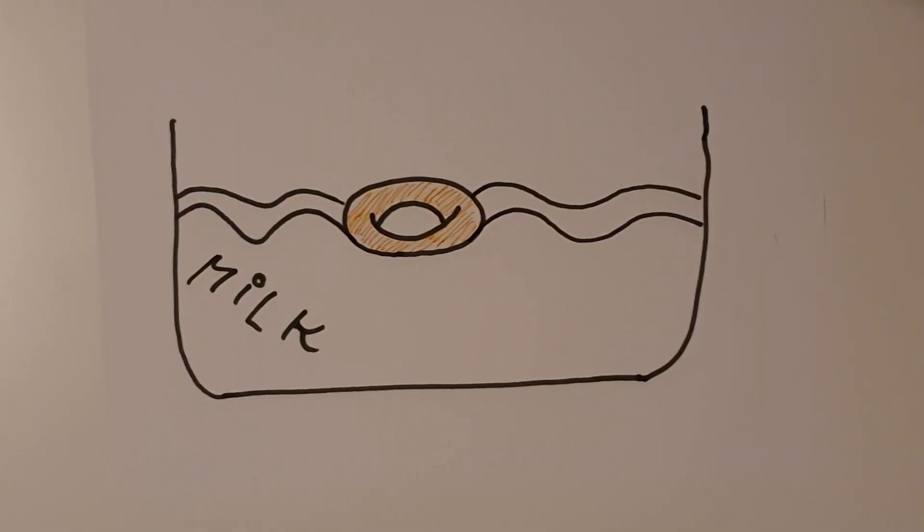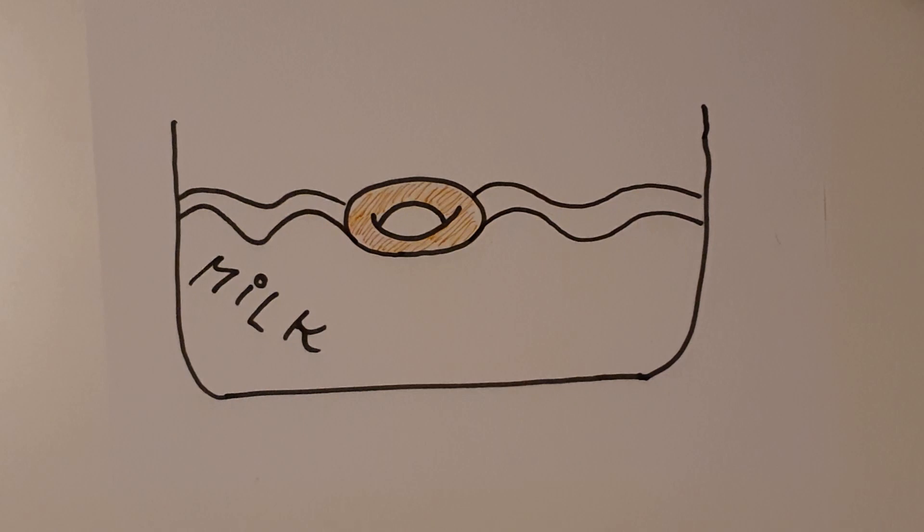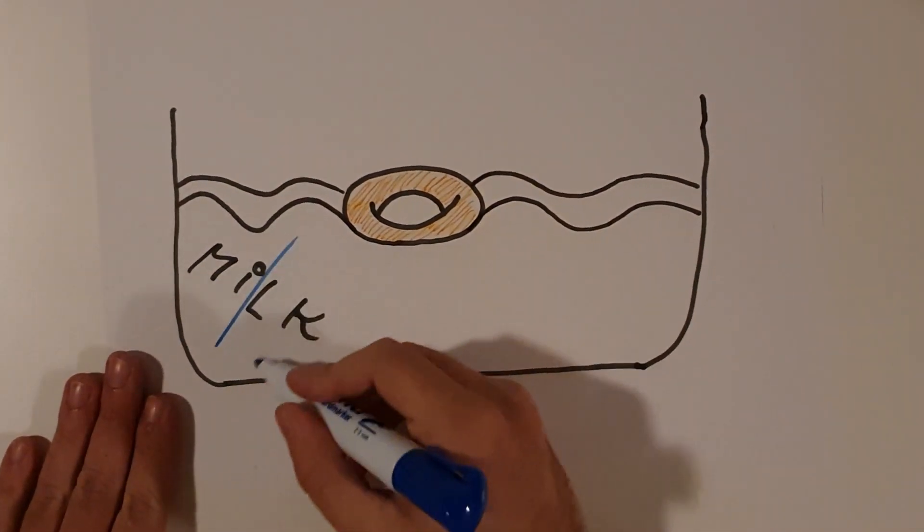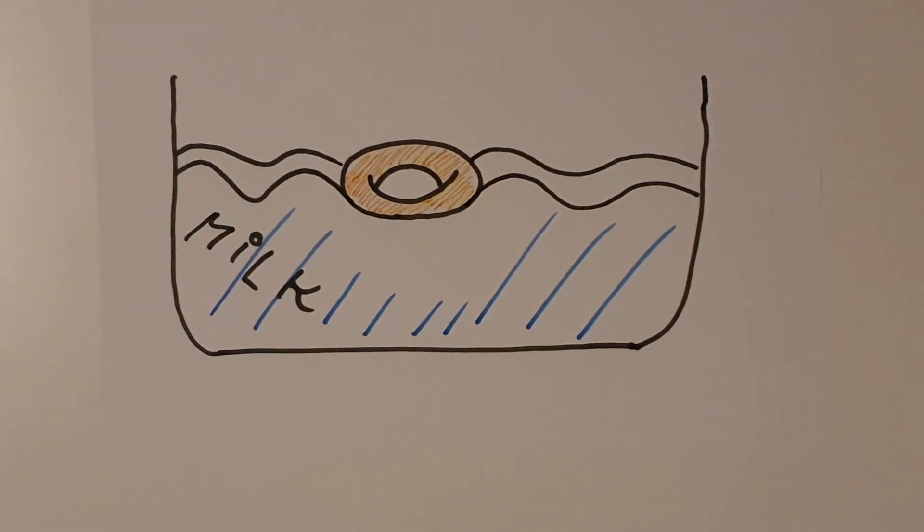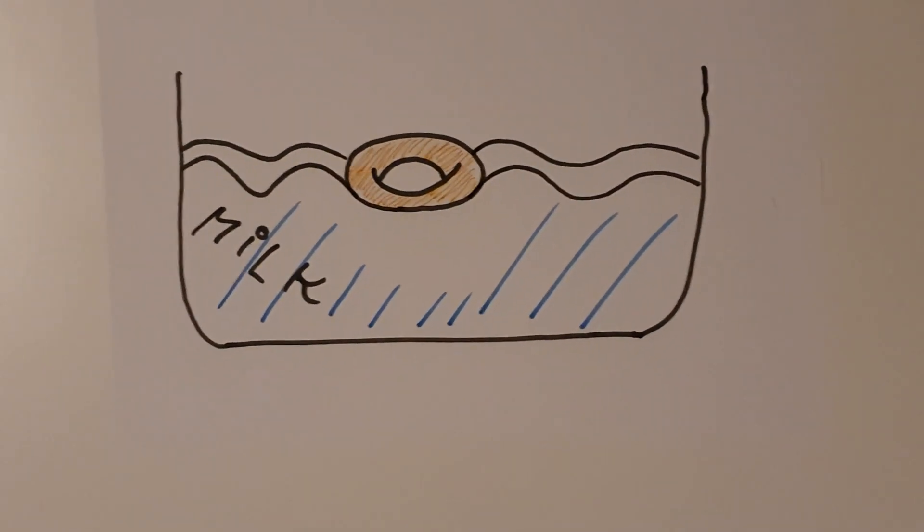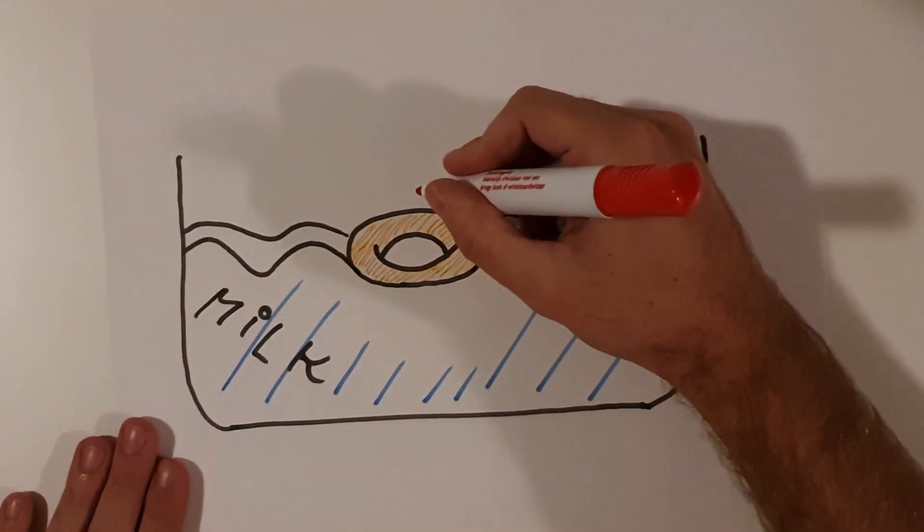The first ingredient in the Cheerios effect, apart from Cheerios and milk of course, is buoyancy. The Cheerios have a lower density than milk, which mostly consists of water. This creates an upwards force that pushes the Cheerios to the surface of the milk.